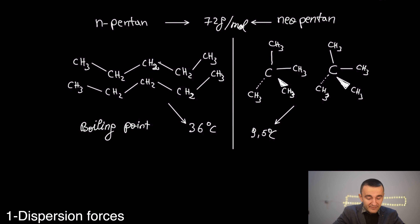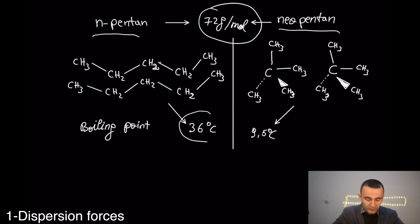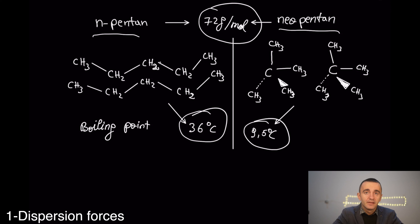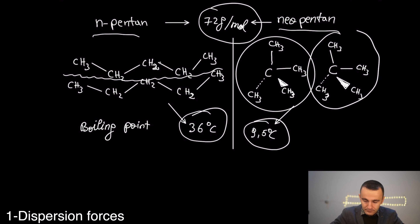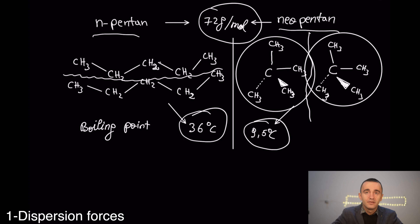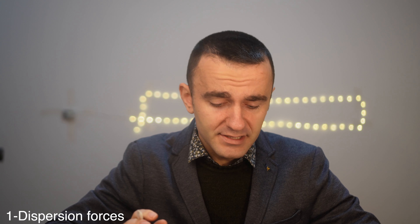Consider n-pentane and neopentane: they have the same molar mass, but n-pentane has a much higher boiling point than neopentane. This is related to the larger surface area of interaction in n-pentane compared to the compact shape of neopentane. We must always consider molecular shape and other factors; molar mass can serve as a guide for comparing dispersion forces within a family of compounds.